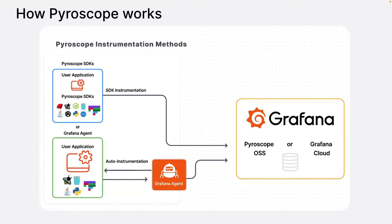Once you have the data and you're sending it to the server, the next thing you need is the Pyroscope server itself. Similar to all of our other databases at Grafana, you can run this open source and send it to a server you're running yourself, or you can use Grafana Cloud and we host the server, scale it, and handle all of that for you. Either way, you send it to the server where it's stored efficiently, and we've added all the functionality for querying it efficiently as well.